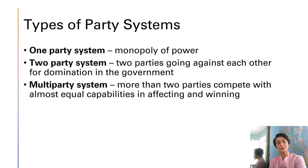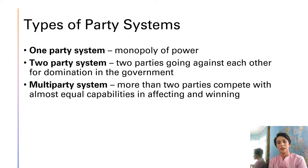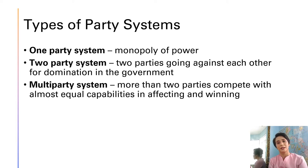There are also three types of party systems. We have the one-party system wherein there is a monopoly of power — there is only one ruling party in the country. Examples of this would be China, North Korea, and other communist countries. People only choose their leaders from that one party, and other parties who try to challenge the ruling party are disbanded. Sometimes the people who start these second or third parties will be jailed.